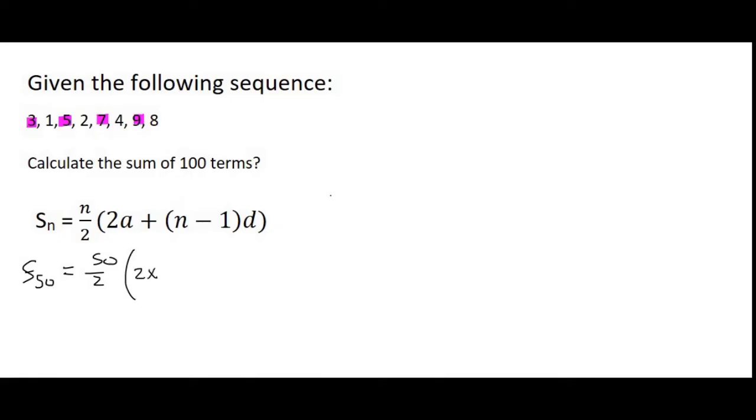We'll then say 2 times A. Now A is usually term 1, which in this case will be 3, plus N is going to be 50 minus 1. And the common difference between those numbers for the arithmetic is 2. You can go ahead and type all of that in on the calculator and we should get an answer of 2,600.